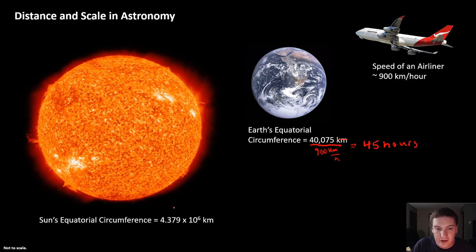Now the Sun is a different story. Let's say we flew at that same 900 kilometers per hour. With the Sun, let's say 900 kilometers per hour. Kilometers cancel. What we would find out if we do this math is that it would take about 4,865 hours to fly around the circumference of the Sun.